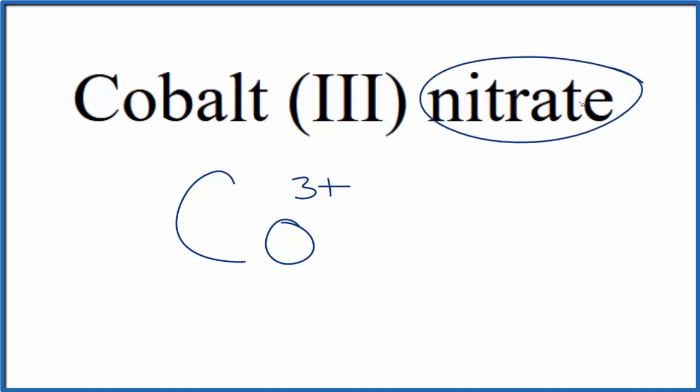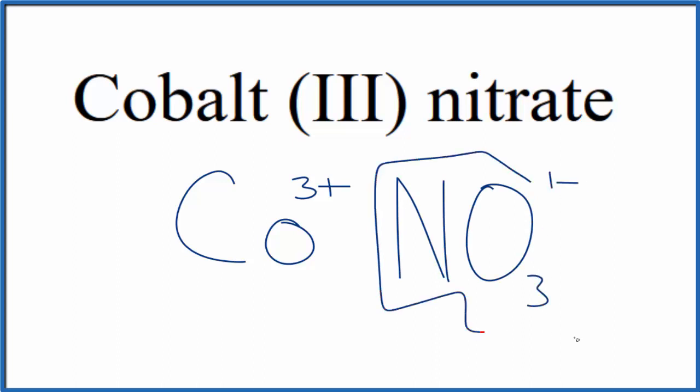Nitrate, you won't find this on the periodic table. When you see this ATE, this is a polyatomic ion. So you either memorize that the nitrate ion is NO3 and has an ionic charge of 1 minus, and that's on the whole nitrate ion, or if you're allowed, you look it up on a table of polyatomic ions.